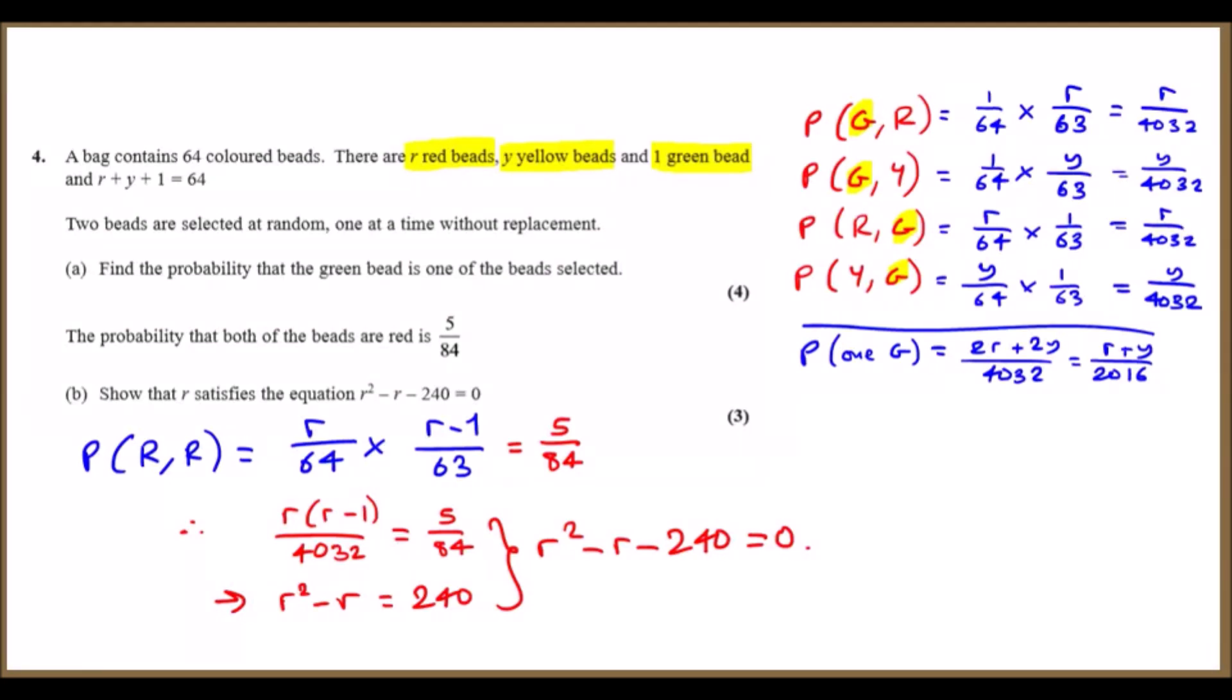Next question: The probability that both of the beads are red is 5r/84. Show that r satisfies this equation, which is a quadratic. Going back to the statement, the probability that both beads are red means we need to show that the first time we pick a red, which is r/64, times the second time pick a red—we've got one less red, by the way, so r minus 1 out of 63.